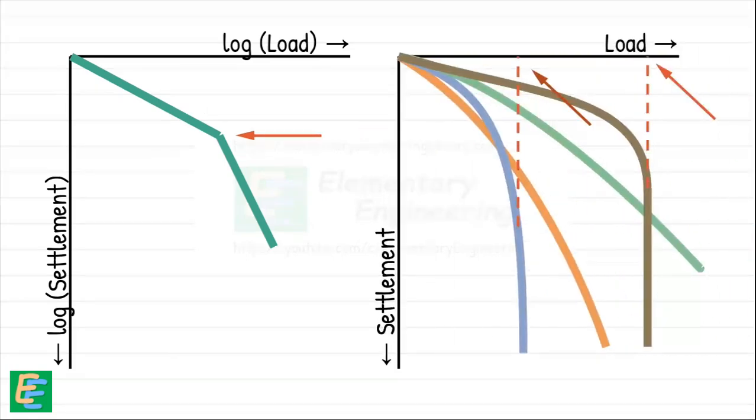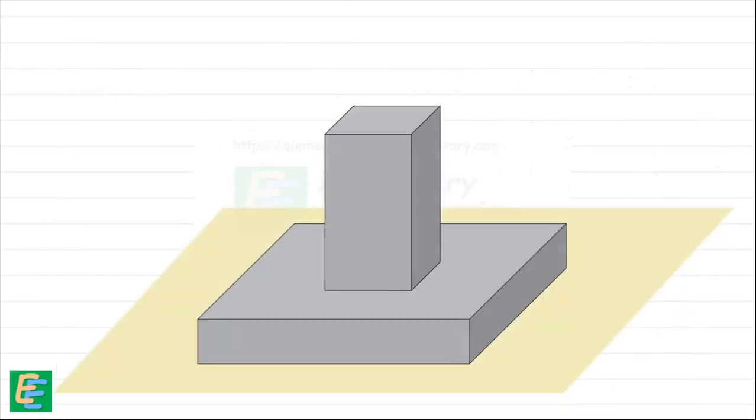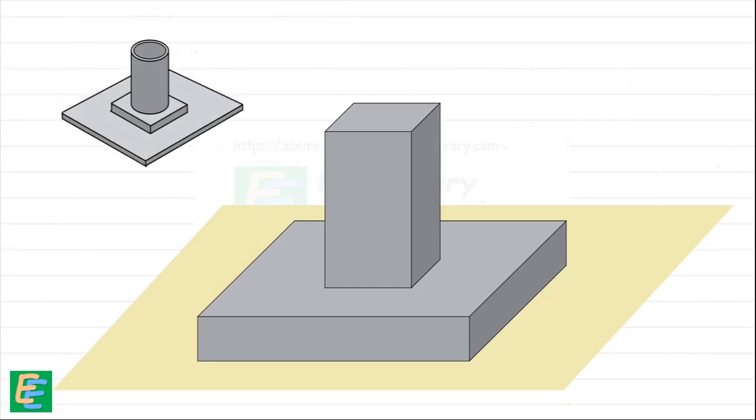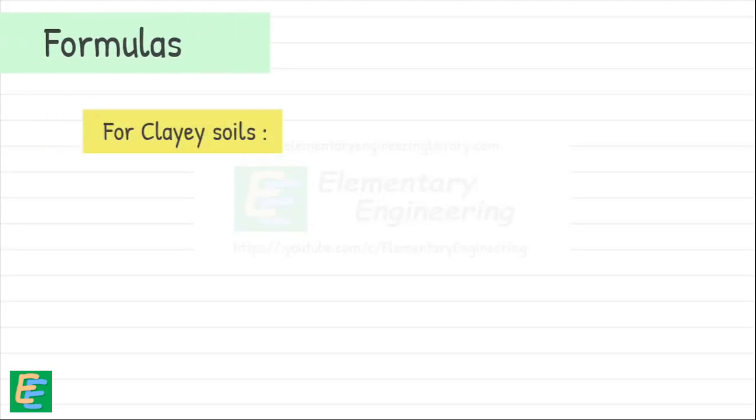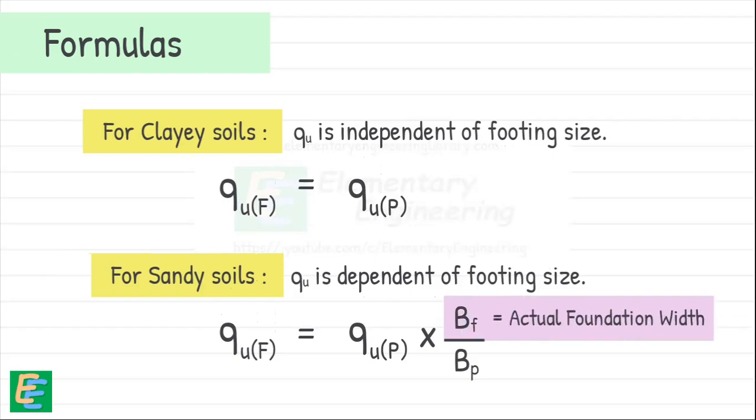The failure points on these curves represent the ultimate bearing capacities of the soil for the test plate, often denoted as qu p. But our actual footing for the structure will be much larger than this small test plate, right? So how do we figure out the ultimate bearing capacity for the real footing? Well, we have some formulas for that. For clayey soils, the ultimate bearing capacity doesn't depend on the size of the footing; therefore, the ultimate bearing capacity of the plate and the actual footing will be the same. But for sandy soils, the ultimate bearing capacity depends upon the size of the footing. So to scale up from our test plate to actual footing, we use this formula. Here, bf is the width of our actual foundation.